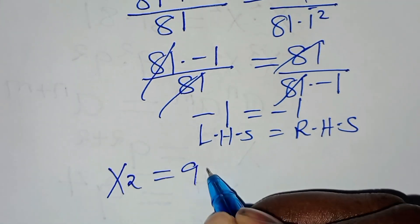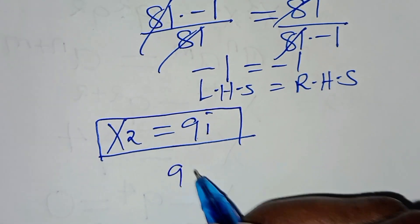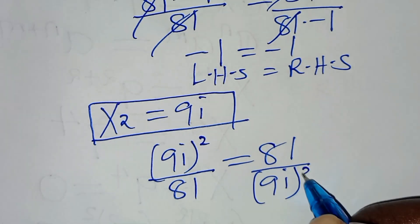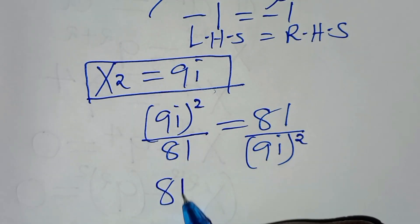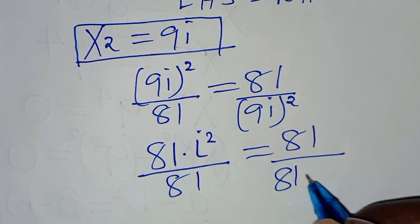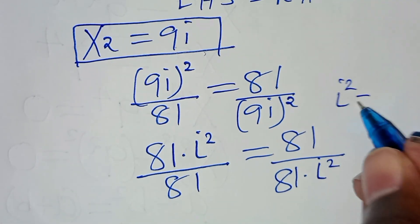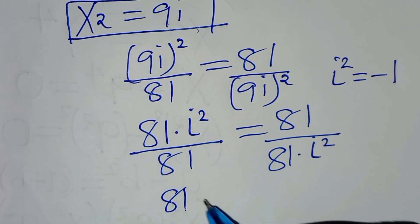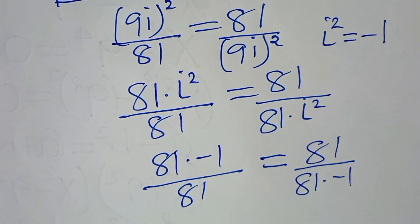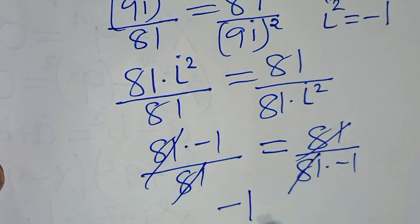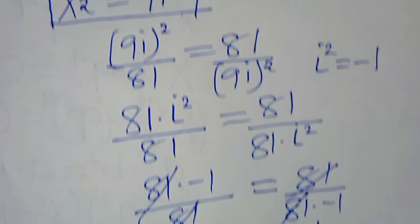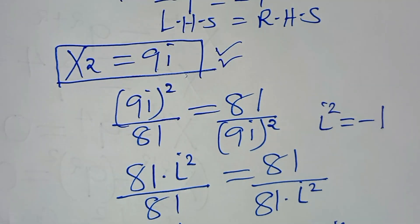Let's check x₂ = 9i. We have (9i)² divided by 81, equal to 81 over (9i)². So 9 squared times i squared divided by 81 equals 81 over 81 times i squared. Since i squared is minus 1, we have 81 times minus 1 over 81, equal to 81 over 81 times minus 1. Simplifying, minus 1 equals minus 1. The left hand side equals the right hand side, so x₂ satisfies the equation.